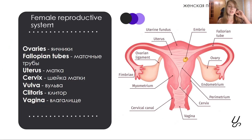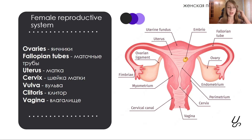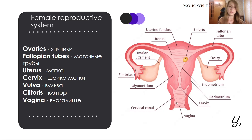The next one is the female reproductive system. Here we will name internal organs such as the ovaries, fallopian tubes, uterus, and vagina. We should also know the external reproductive organs: the vulva and clitoris.